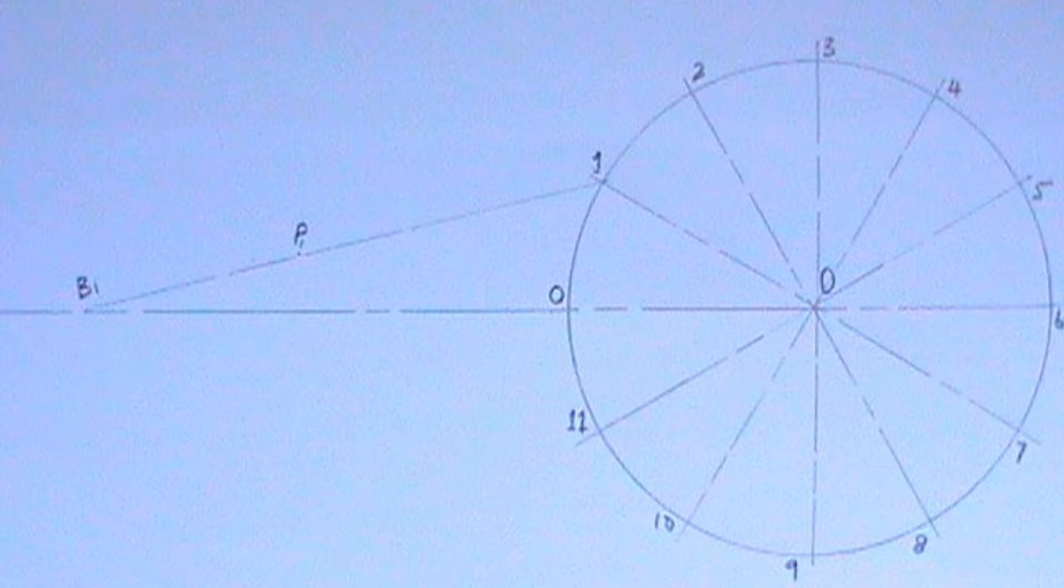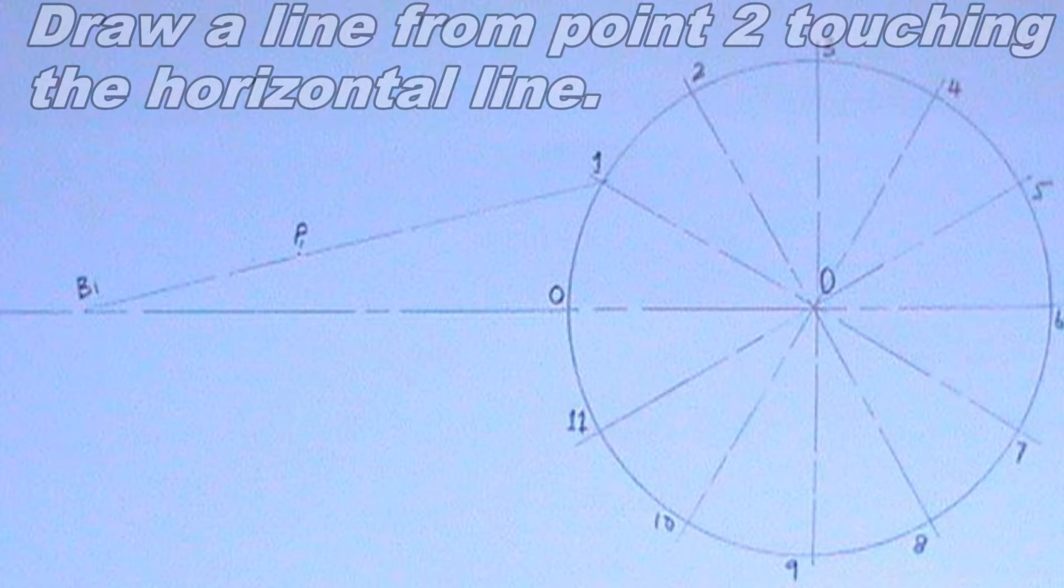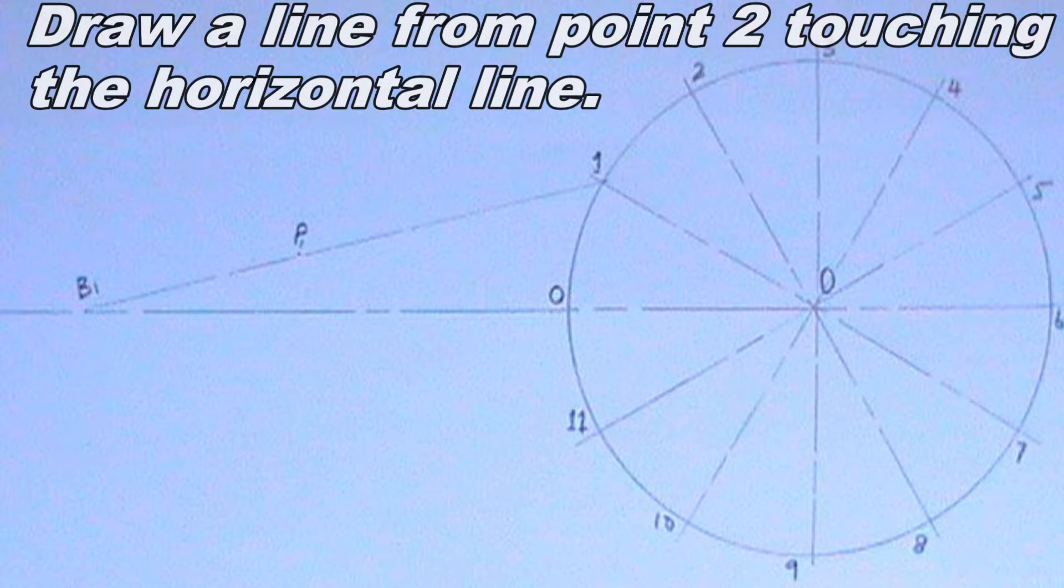I will also draw a line from point 2 touching the horizontal line. The length of the line will be the same as the line I drew from point 1. Since the line I drew from point 1 is 95 millimeters in length, this line will also be 95 millimeters in length. I will label the point where the line intersects the horizontal line B2. I will also mark a point 40 millimeters from point B2. I will label the point P2.